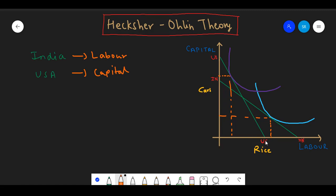This is the iso-quant of India for producing certain level of rice, and this is the iso-quant for the US for producing certain level of car. This is the factor price line for India and this is the factor price line for the US. The point of tangency shows the optimal level of output each country should opt to produce.